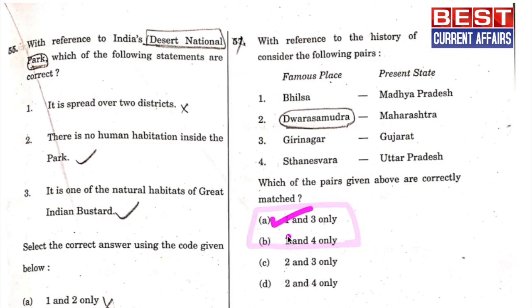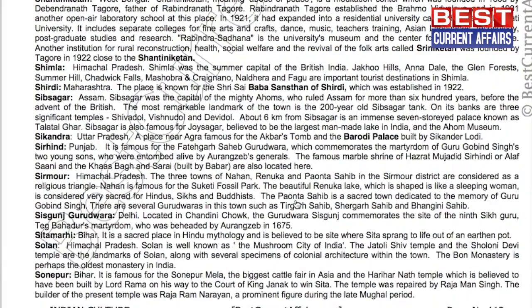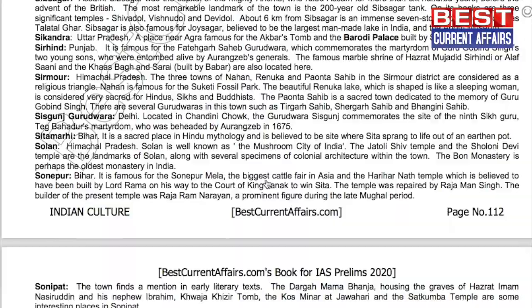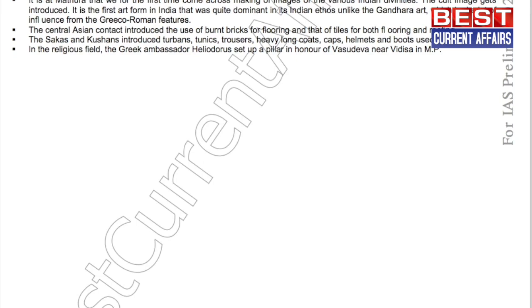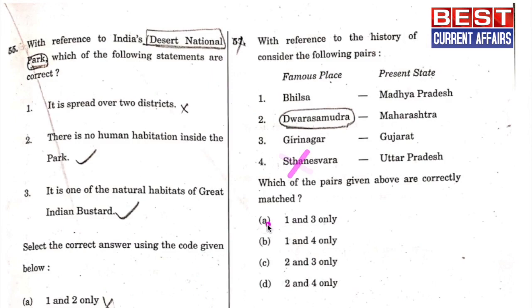With statement one correct, you are left with options A and B. Checking statement four — Sthaneshwar: it is wrong because Sthaneshwar is in Haryana, not as stated in the question. From our Indian culture booklet, page 112: Rhotak, Haryana — Sthaneshwari is identified as one of the strong forts in Rhotak, Haryana. Statement four is wrong, leaving option A — one and three. A is the answer.